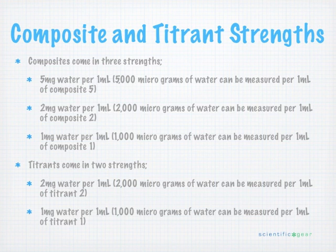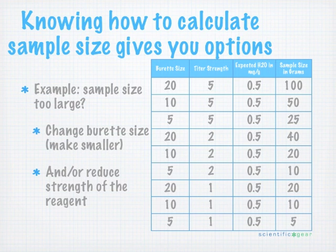If we do our sample size calculations and find that the sample size is too large with our current setup, we have the option of changing burette size. If you're using a 20-milliliter burette and calculations show you'd need a very large sample, we can cut that burette size down — that's the first thing I would approach. After that, we can reduce the strength of the reagent. That's one of the reasons we offer the Composite 5, 2, and 1, so we can deal with that without having to dilute the reagents ourselves.